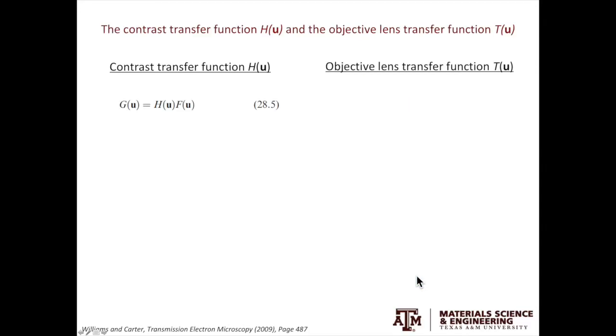Performing Fourier transform will get a new set of equations. Capital G(u) is the Fourier transform of g(r), the image function. F(u) on the right-hand side is the Fourier transform of the object function. H(u) is the Fourier transform of the point spread function, called contrast transfer function.